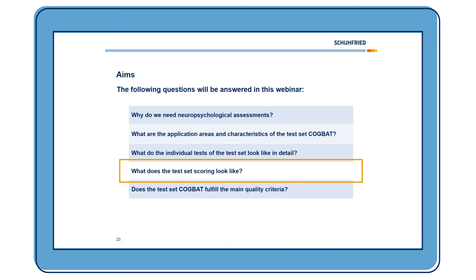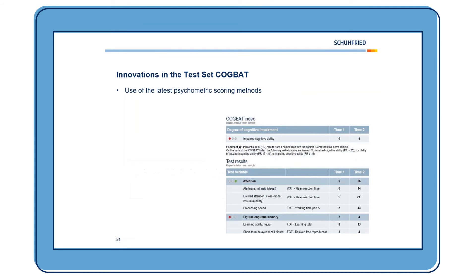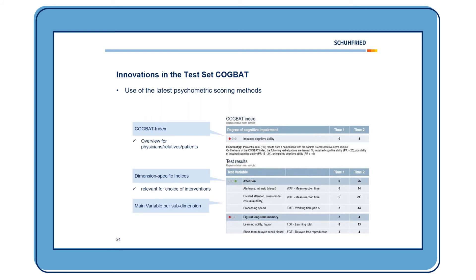Now let's look at the test set scoring. We use the latest psychometric scoring methods. At the top is the Cockpit index, based on structural equation modeling, which can be used as an overview for physicians and patients. We also have dimension-specific indices, mainly relevant for choosing interventions, and main variables per sub-dimension. Primary and follow-up testing results are presented together in one table so we can see whether neuropsychological functions have changed.